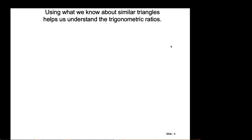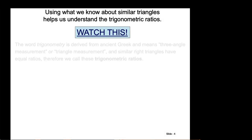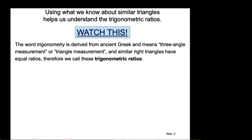The word trigonometry is derived from ancient Greek and means three-angle measurement, or triangle measurement, and similar right triangles have equal ratios — therefore we call these the trigonometric ratios.